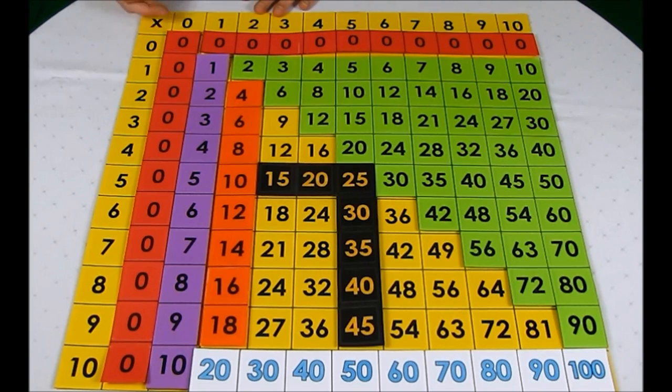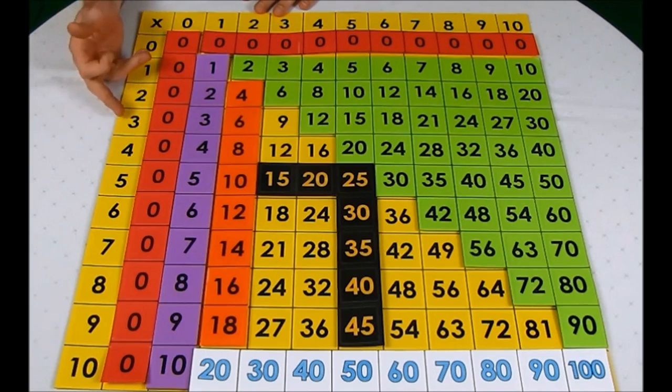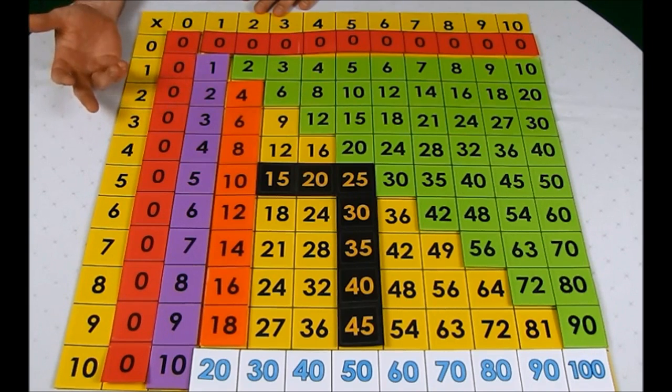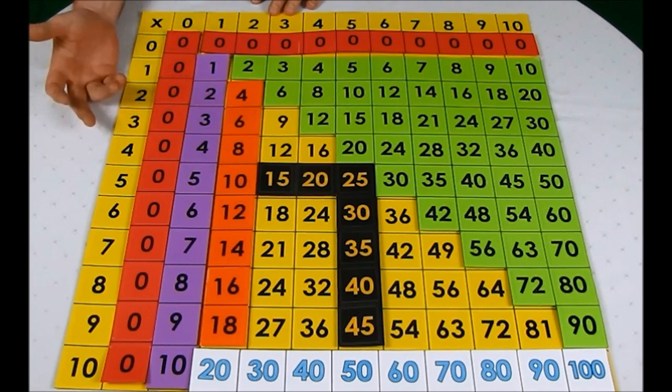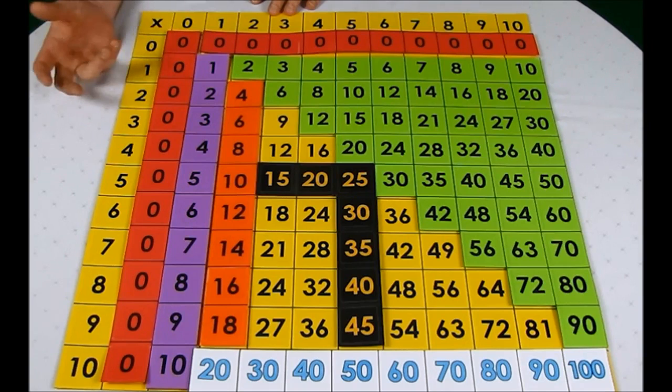So the first example would be, you'll notice this red section here, all the answers are zero. And basically we know that when you multiply anything by zero, the answer is zero. Some children with learning difficulties think that three zeros are three, and so we may need to do a bit of work to help them appreciate and understand that that's not the case.